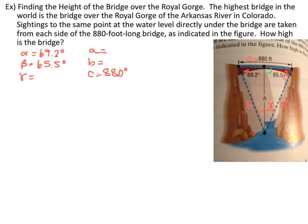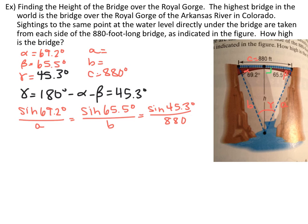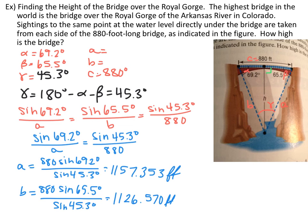From the given information, we can find angle gamma: all three angles add up to 180 degrees, so gamma equals 180 minus alpha minus beta, giving gamma equals 45.3 degrees. Set up the Law of Sines with this information. Solving, A equals 1,157.353 feet and B equals 1,126.570 feet. You only needed to find one of these sides — either works for the next step.